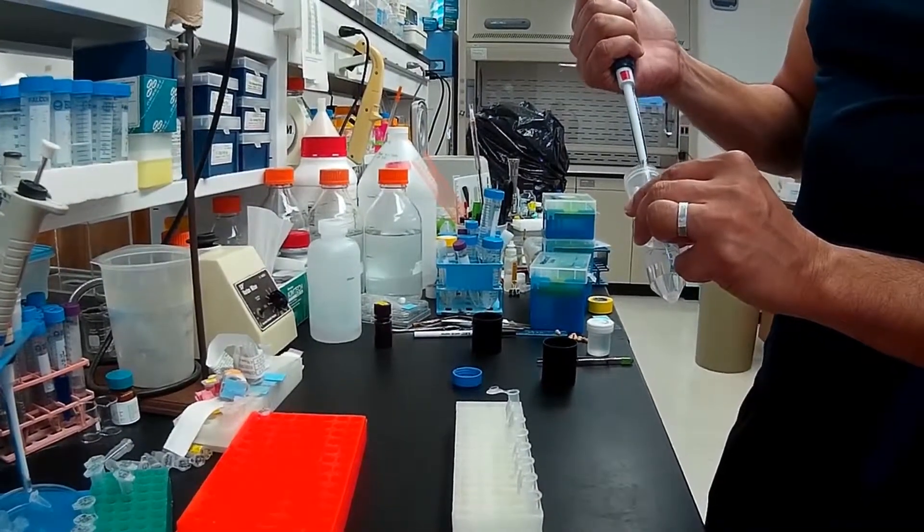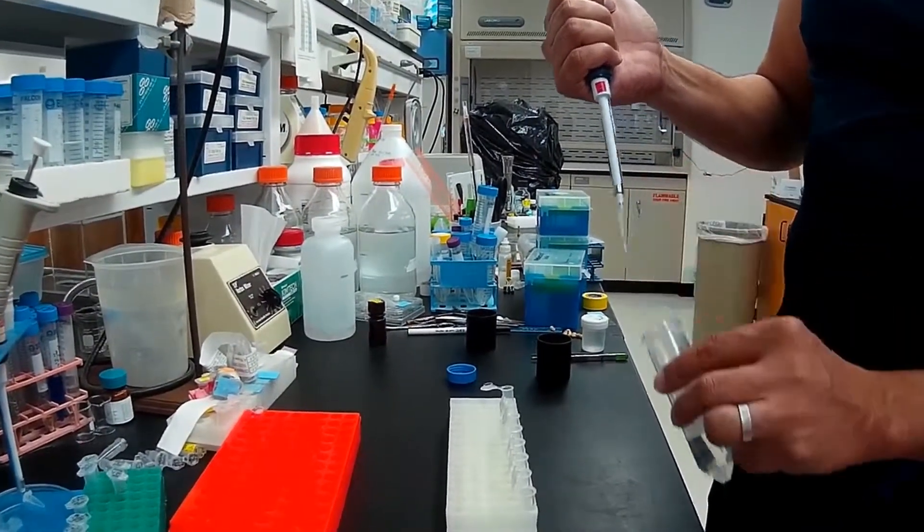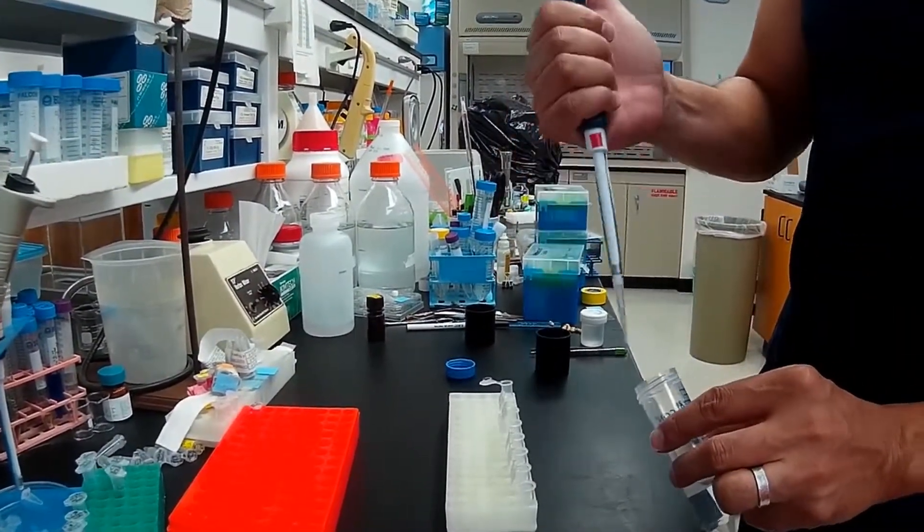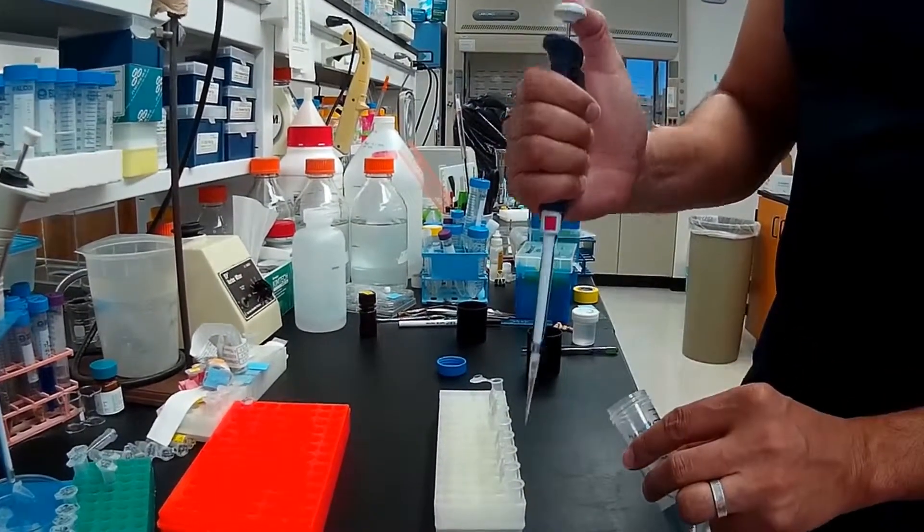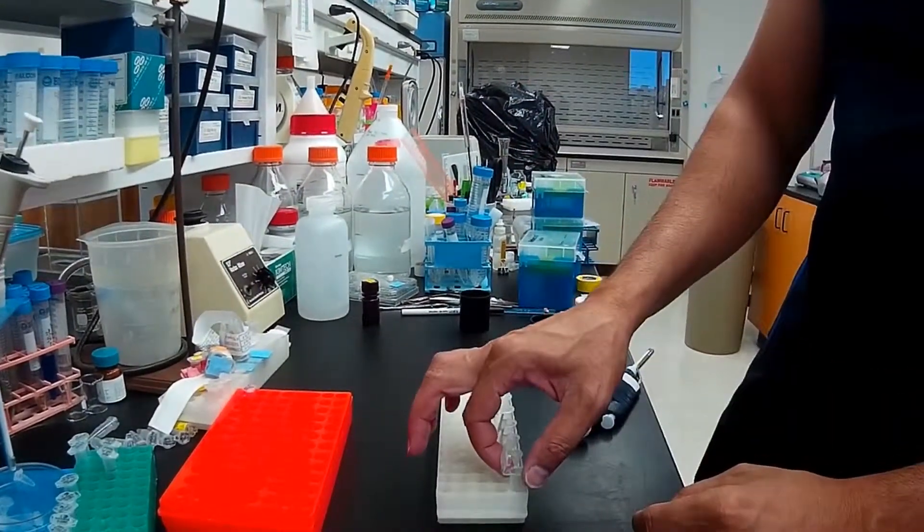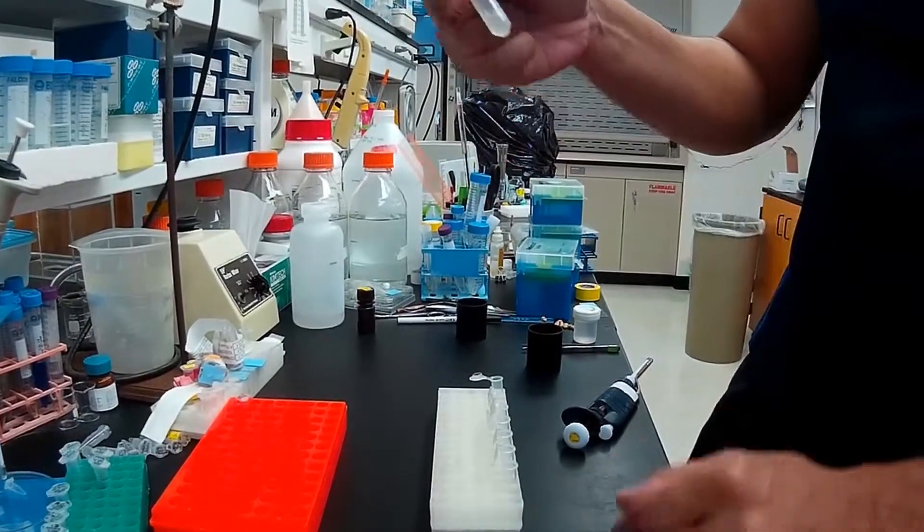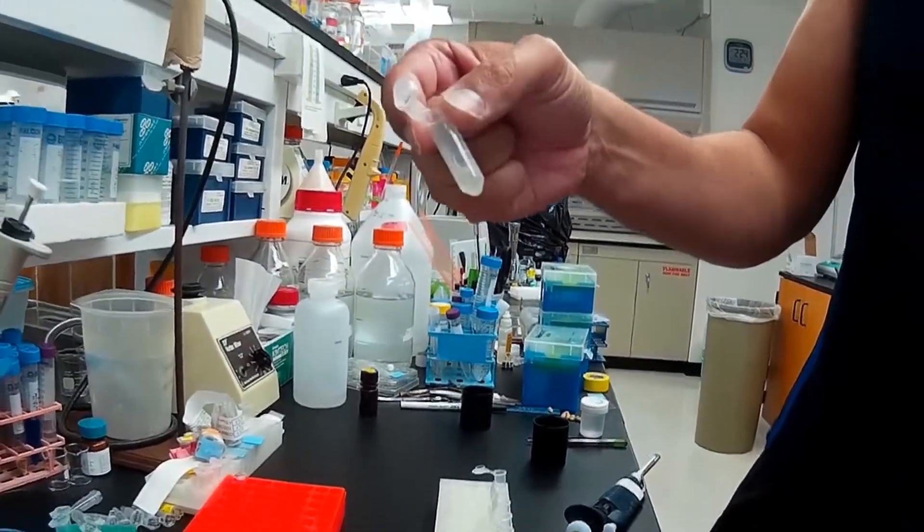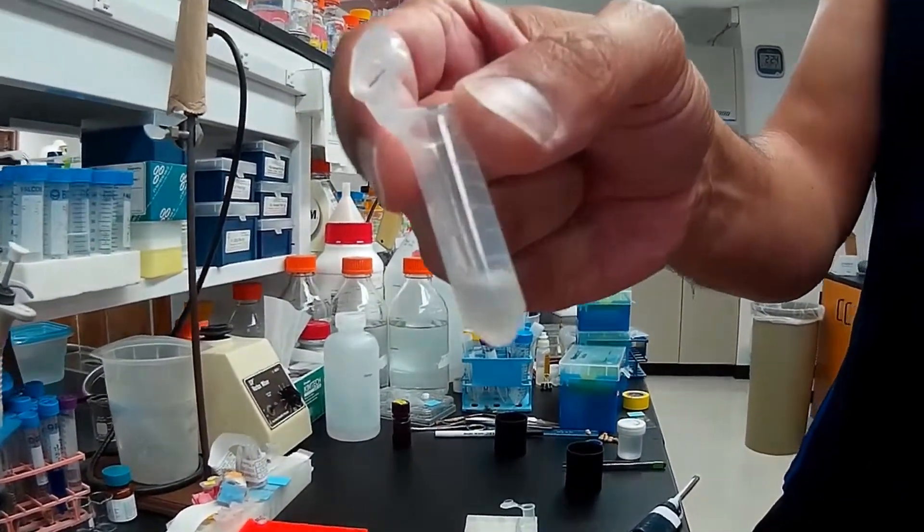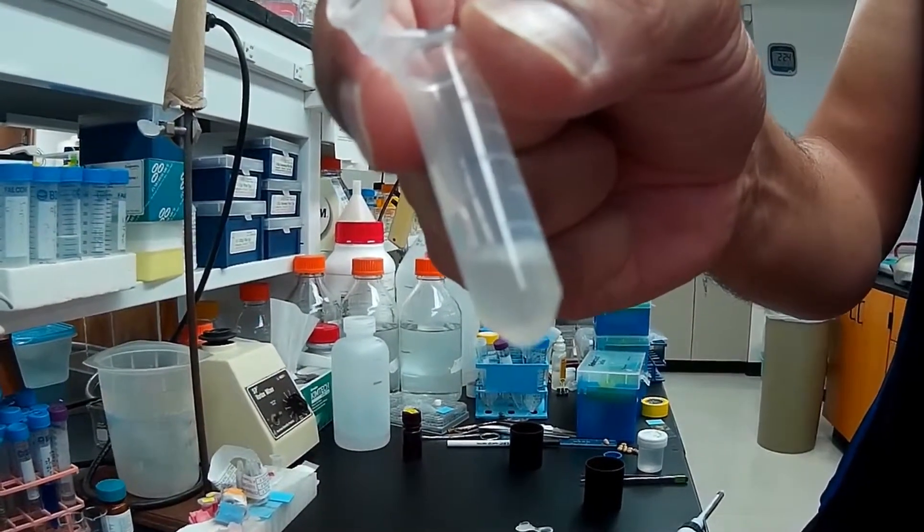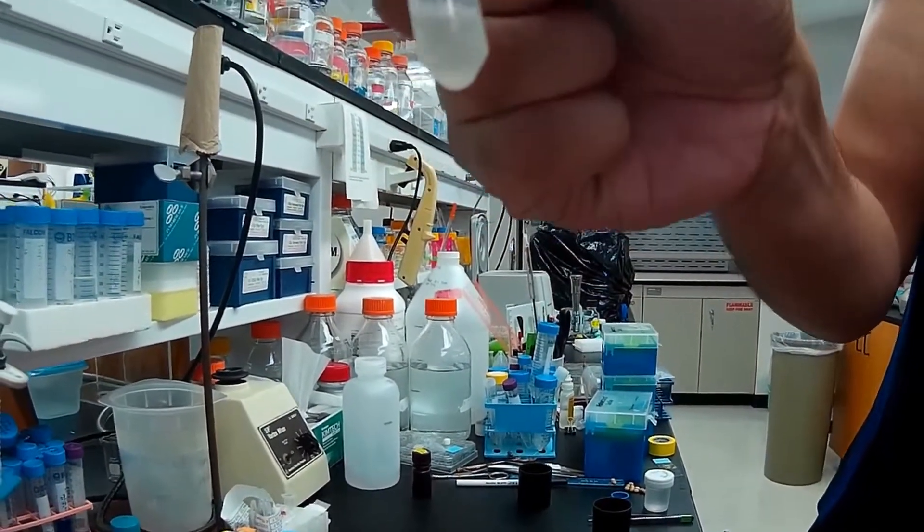Next, we'll add 200 microliters of solution two to the re-suspended E. coli that will lyse the cells. Mix by gentle shaking. You should not shake hard at this point. It should be gentle and you'll see a clear lysate. The lysate will become slightly clearer.